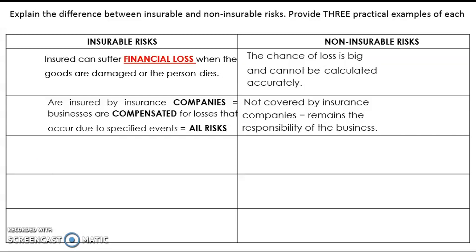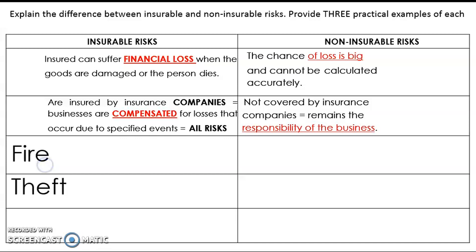Some keywords: for insurable risk, somebody suffers a financial loss and the word 'compensate' means the insurance companies pay off the insured. For non-insurable risk, when the loss is too big and cannot be calculated, it remains the responsibility of the company.